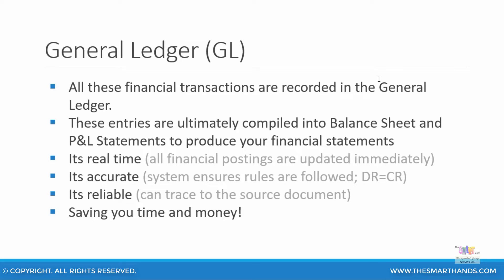Let's look at another important section in financial accounting — the general ledger. All your financial transactions are recorded in your general ledger. You will hear a terminology called a sub-ledger. Items such as customers, vendors, and assets are called sub-ledgers because you record your transactions directly against a specific customer, vendor, or fixed asset. These sub-ledgers point to a general ledger. For example, customer A, customer B, customer C will form the sub-ledgers, whereas the general ledger will be your accounts receivable, which lies in your balance sheet. All your financial transactions recorded in your general ledger are ultimately combined into balance sheet and P&L statements, which produce your financial statements.